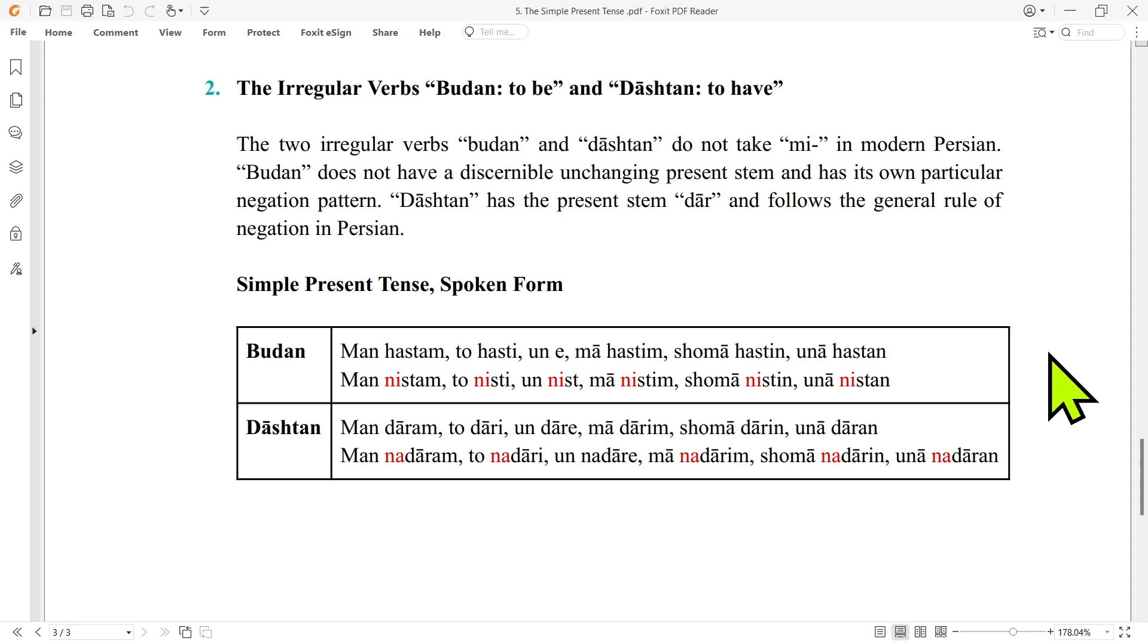For budan in the affirmative, we have man hastam, to hasti, un e, ma hastim, shoma hastin, and una hastan.